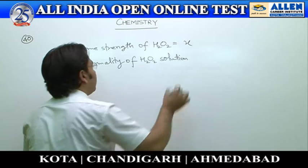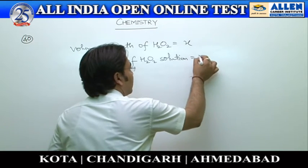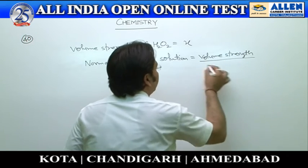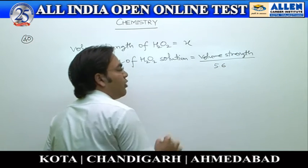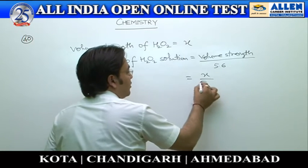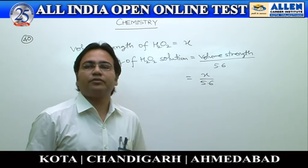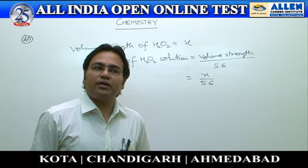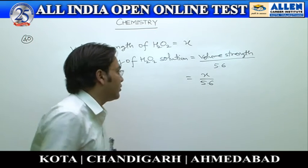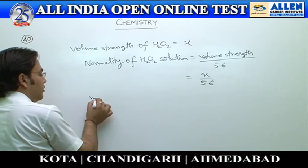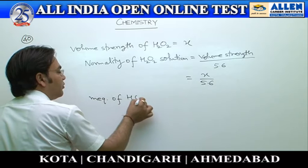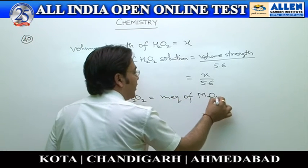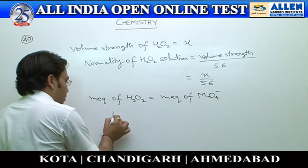Initially, we have to find the normality of the H₂O₂ solution. We know the formula: normality of H₂O₂ equals volume strength divided by 5.6, so it is X/5.6. From the concept of milliequivalents, we know that for any titration, from the law of chemical equivalents, milliequivalents of H₂O₂ should equal milliequivalents of permanganate ion.